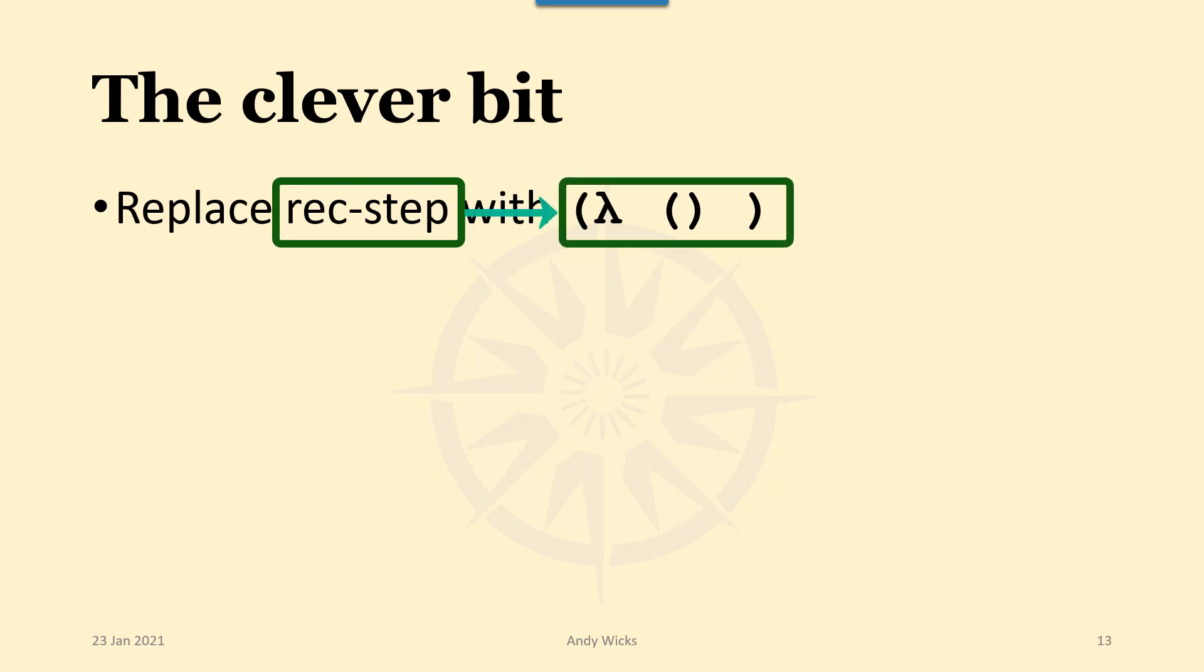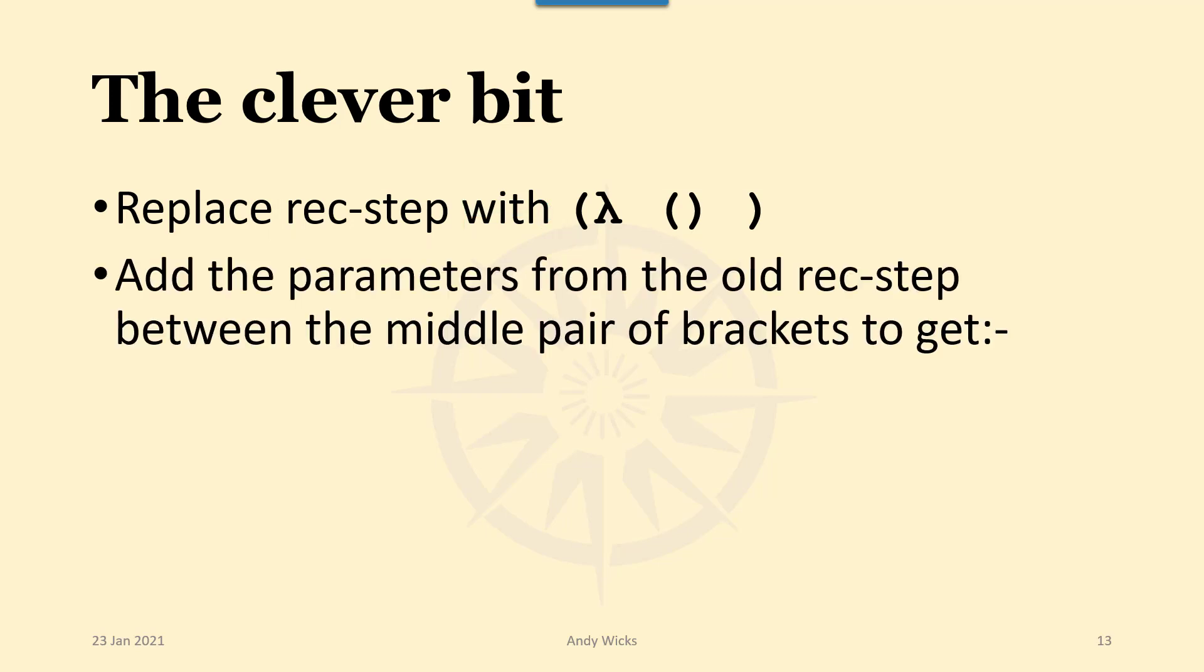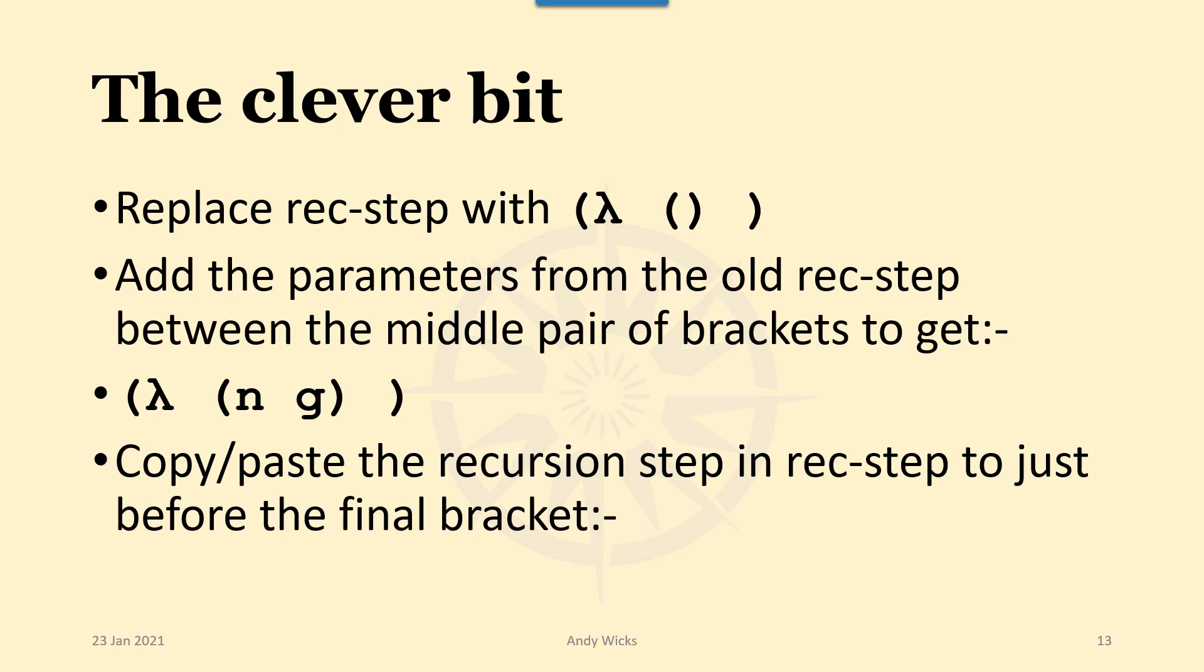And that's what we do each time. We find the recursion step and replace that with the start of a lambda function. Now those central brackets, they're the ones that take the parameters. So the first thing we have to do is to get the parameters from the old rec-step function. So what we get is, open bracket, lambda with n and g as the parameters. Then we can copy and paste the recursion step directly in just before the final bracket.